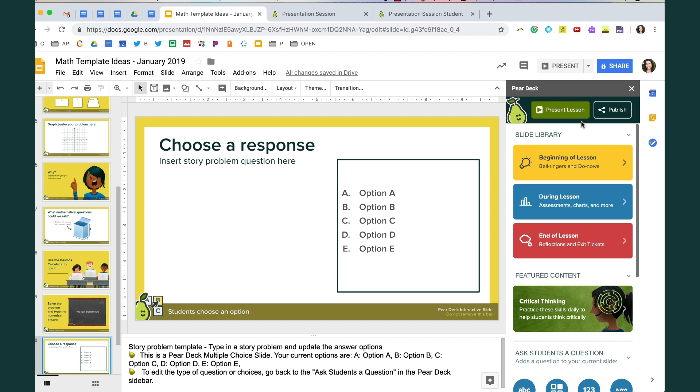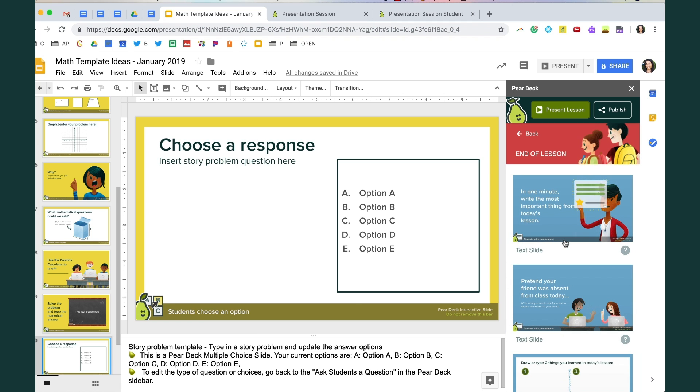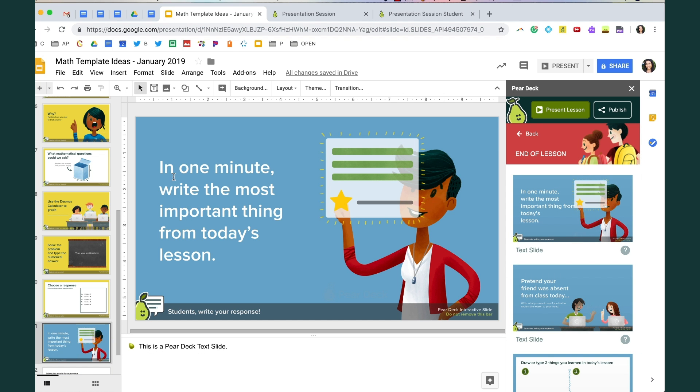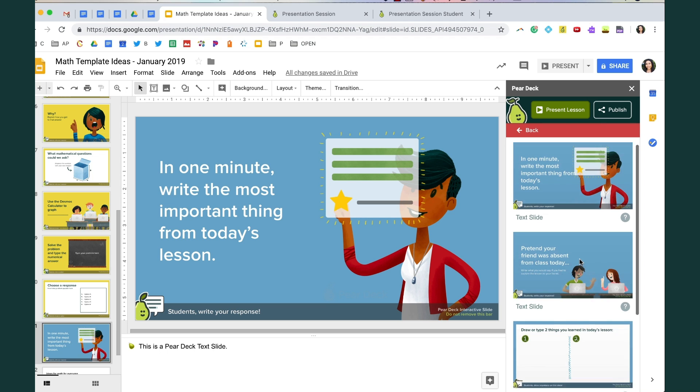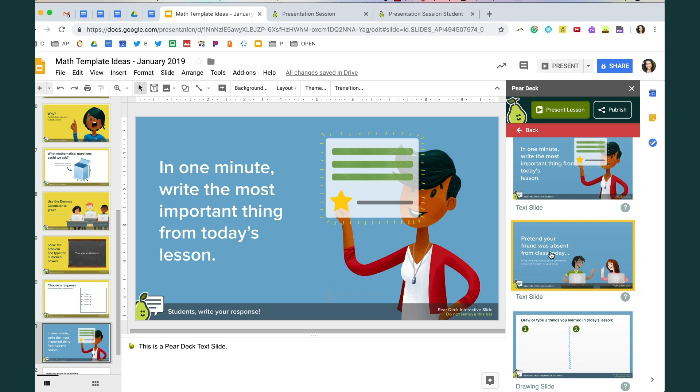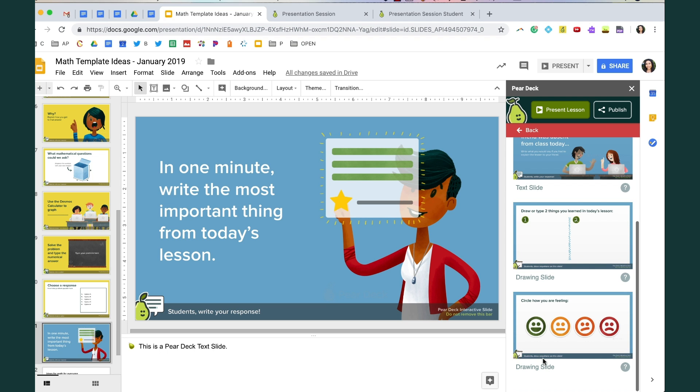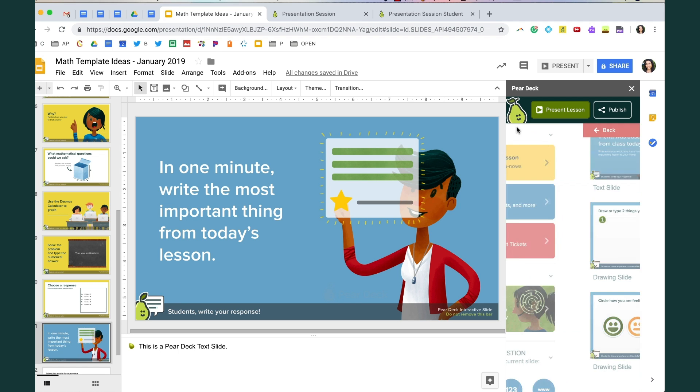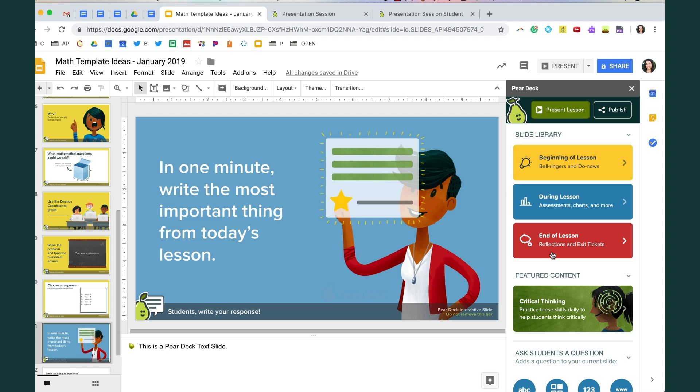Finally there are always these beginning and end of lesson slide types and one of my favorites is in one minute write the most important thing from today's lesson or pretend your friend was absent from class today. I love that one too. Circle how you're feeling to get a sense of how students are feeling at the end of class before you close just to know what students you might want to go check in on first. Those are always great to end the lesson with also.